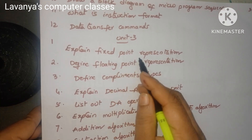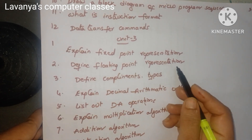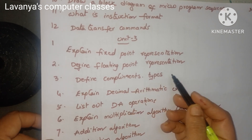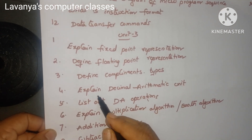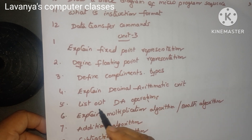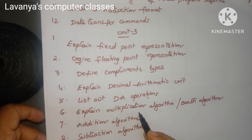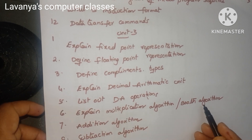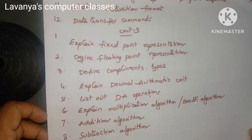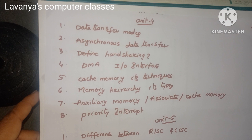Unit 3 questions: explain fixed point representation with a numerical example. Define floating point representations. Define complements and their types — 1's complement, 2's complement, 9's complement, and 10's complement. Explain the decimal arithmetic unit. List out the decimal arithmetic unit operations. Explain the multiplication algorithm or Booth's algorithm, addition algorithm, and subtraction algorithm. These are short answer questions, but these are also coming for long answer as well.